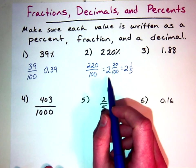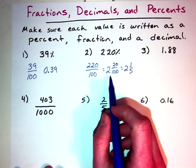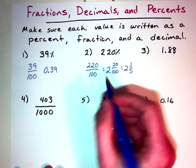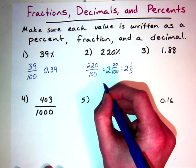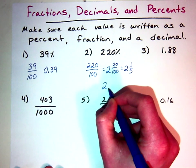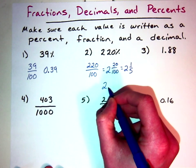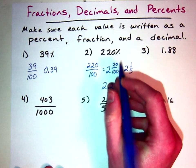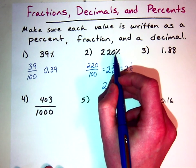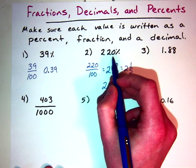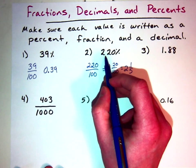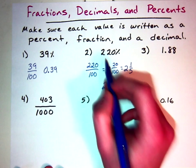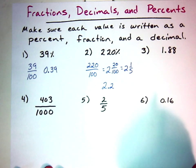Now let's turn two hundred twenty percent into a decimal. All we have to do is move the decimal two spots to the left, which would get us to 2.2. The decimal starts on the right side and moves between the two twos.